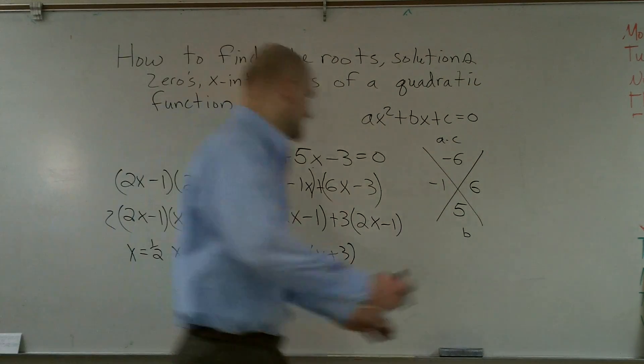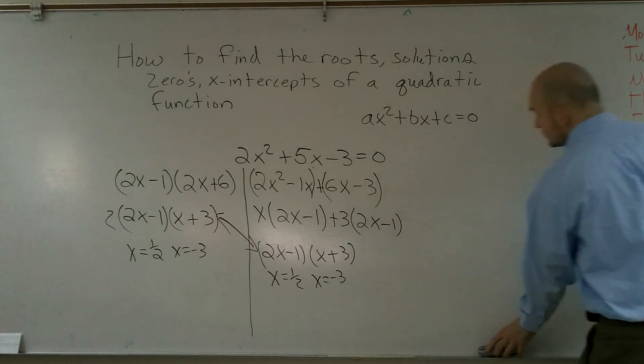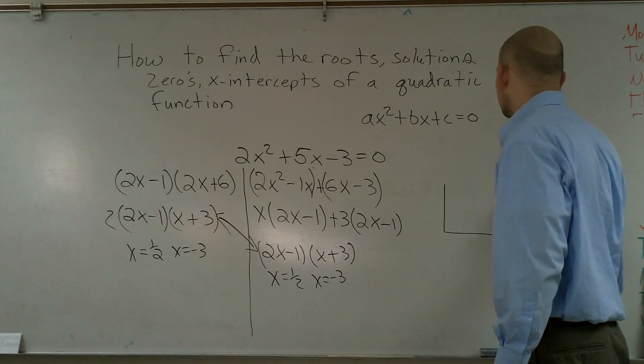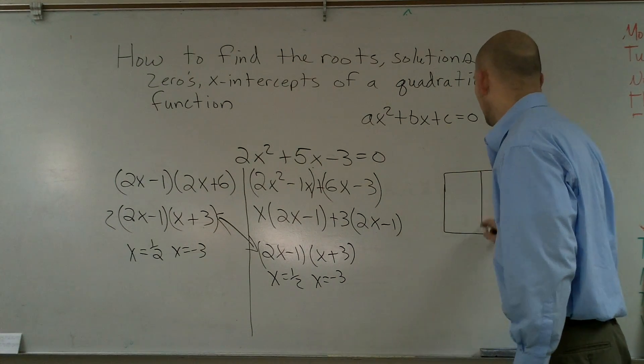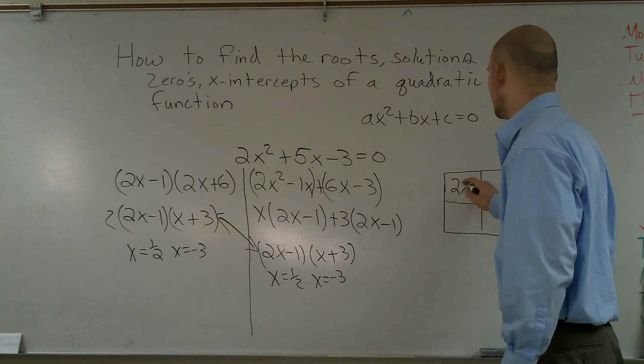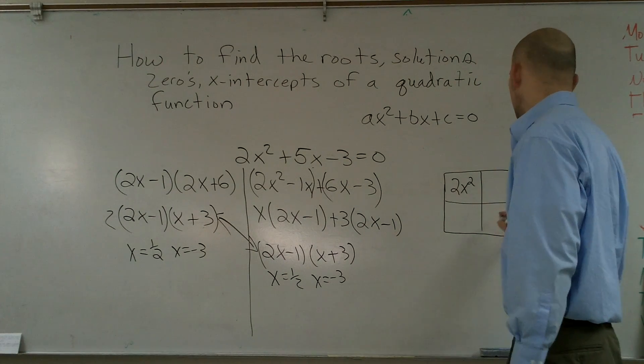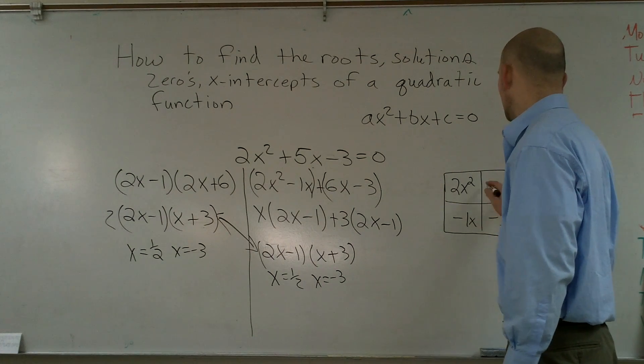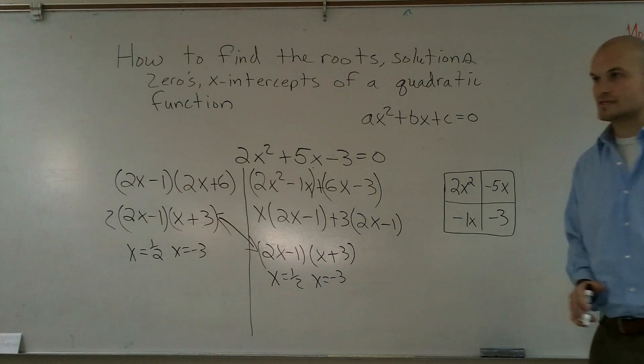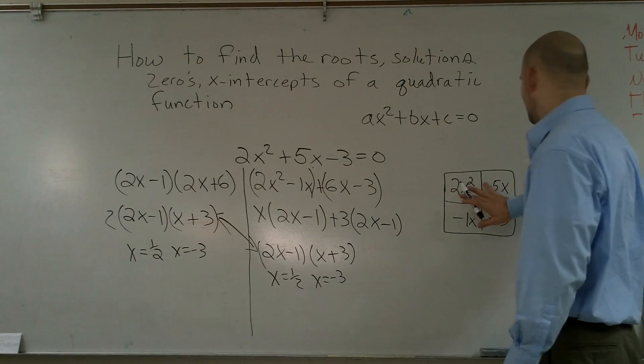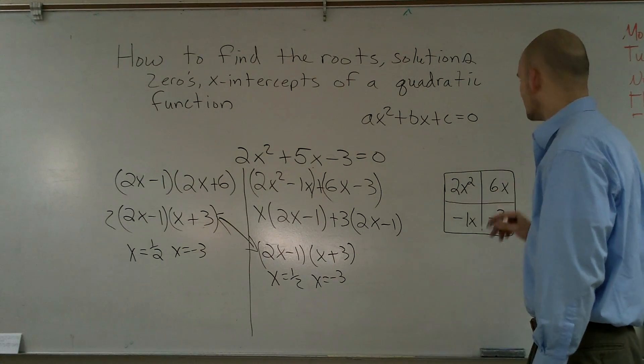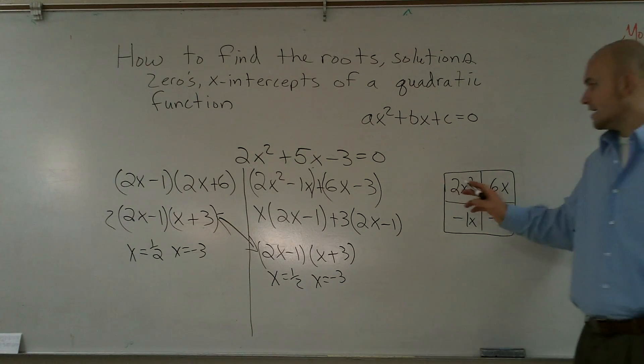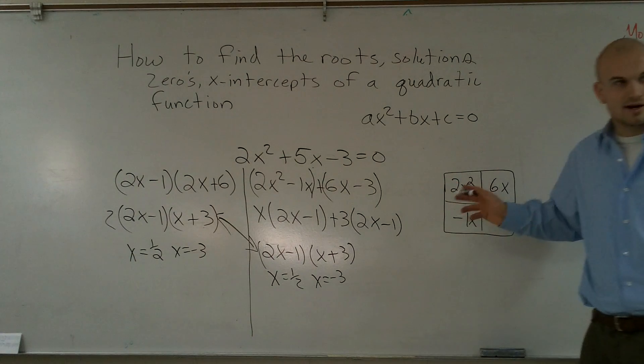And the final way I can do this, if either of those don't really make sense to you, you can always represent it as an area. So I'll make a box and I'll put my A term and my C term. A term goes in the top left corner and my C term goes in the bottom right. I put my two factors there, which were negative 1x and 6x. And then you simply just say, where did my two areas go? Or what are the side lengths? If here's the area, what are the side lengths?